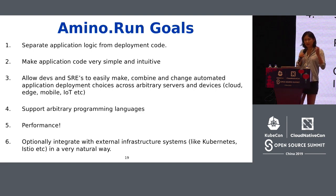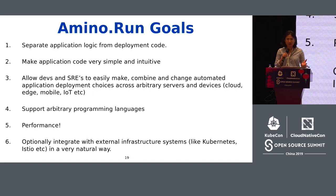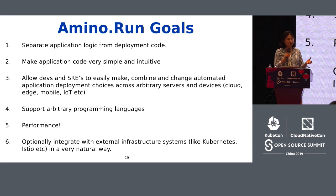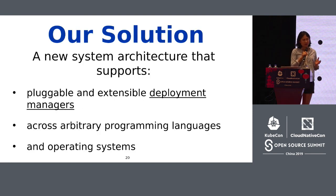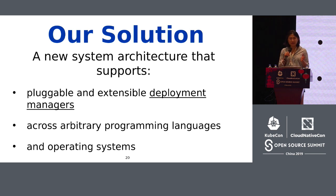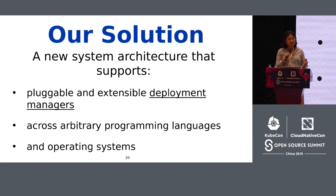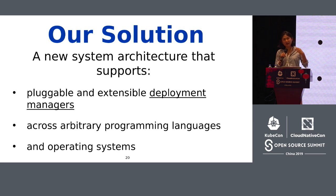We wanted to make sure the application code itself was simple and intuitive, but we still wanted application programmers and SREs to be able to decide how to deploy their application — so we didn't want to take all control away even while separating deployment code from application code. We also had high-level goals: support a large number of programming languages, provide reasonable performance, and support external infrastructure systems like Kubernetes, Istio, and Argo CD.